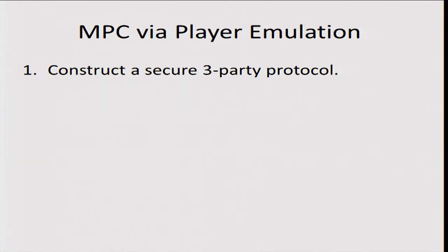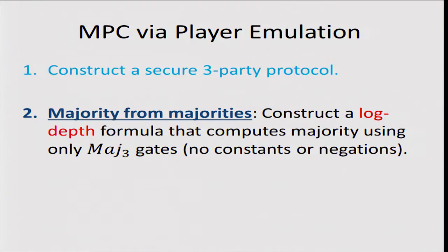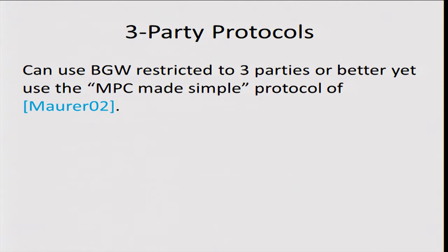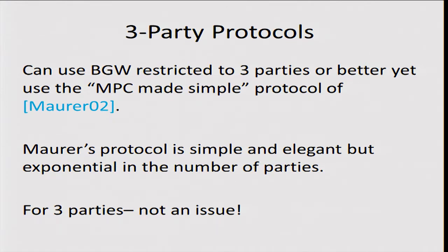We're missing two steps. First, we need a secure three-party protocol. Second, we need a logarithmic-depth formula computing the majority function using only three-input majority gates, with no constant or negation gates. For the three-party protocol, we can use BGW restricted to three players, but we can do better: there's a protocol by Maurer called MPC Made Simple, a very simple and elegant protocol based on replicated secret sharing. Its major downside is that it's exponential in the number of players, but exponential in three is manageable.